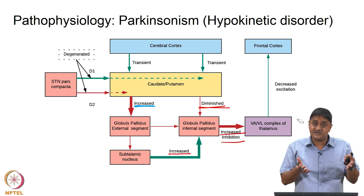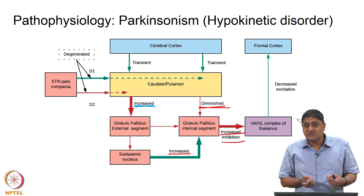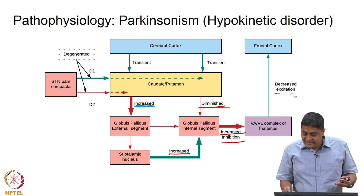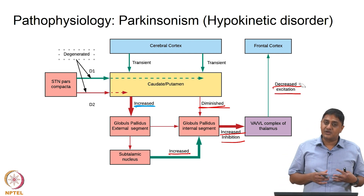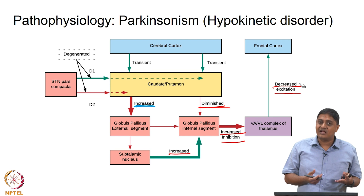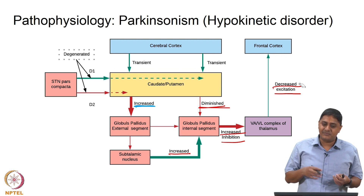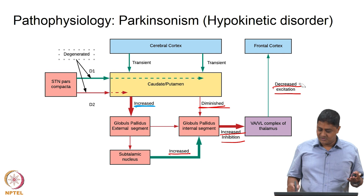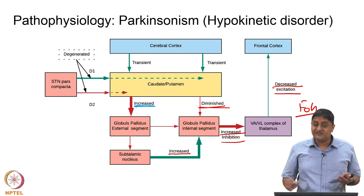The increased inhibition means there is less ability to produce wanted movements. Essentially, there is decreased excitation of the thalamocortical neurons and decreased excitation of the frontal cortex. The patient wants to do something but is not able to do it — the patient wants to take a step but is not able to, which is what results in what is called freezing of gait.